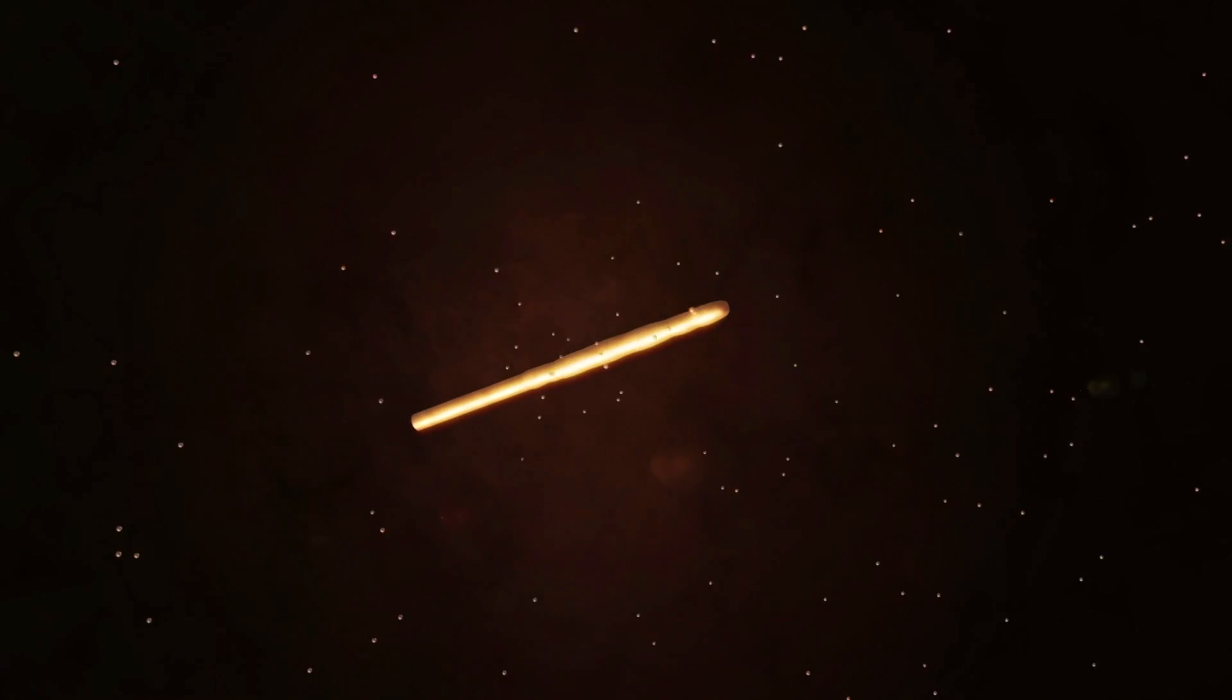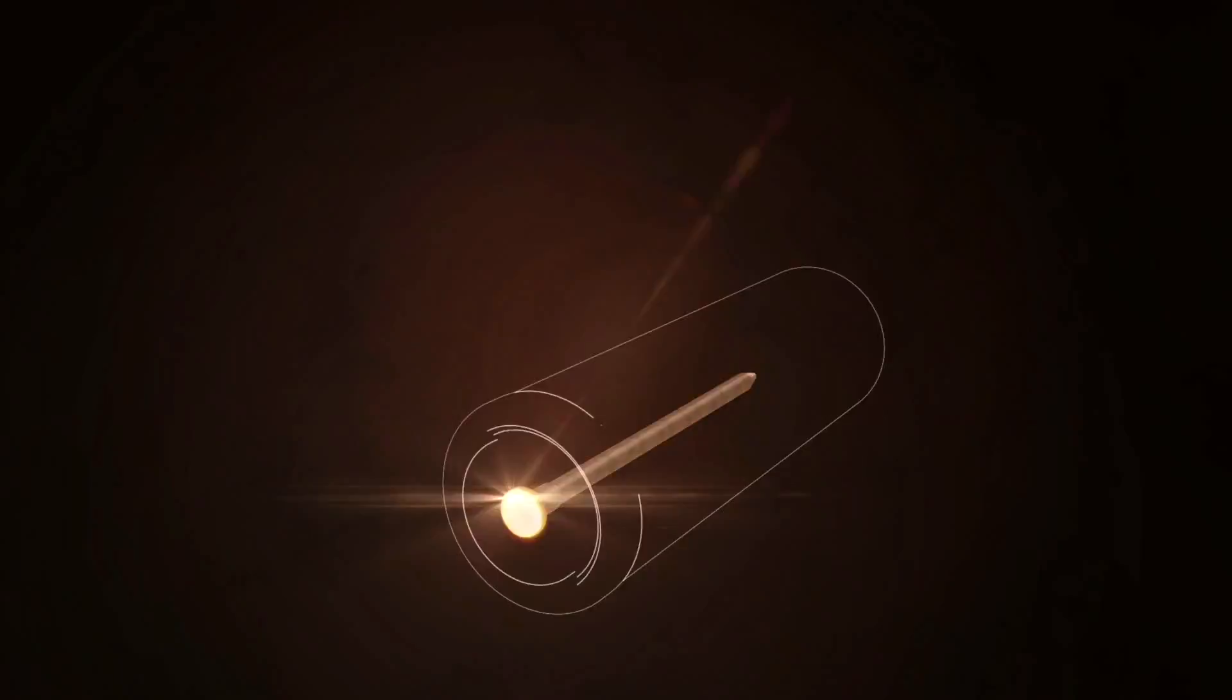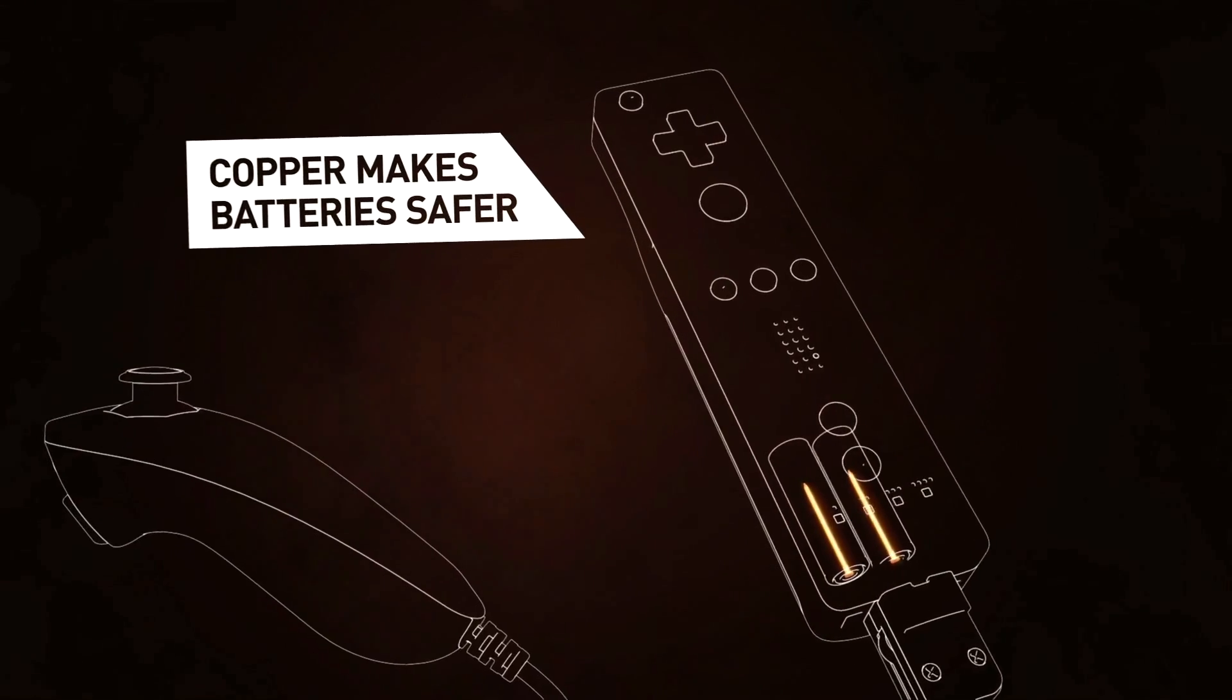A copper alloy nail reduces hydrogen off-gassing, making batteries safer, easier to manufacture and more powerful in use.